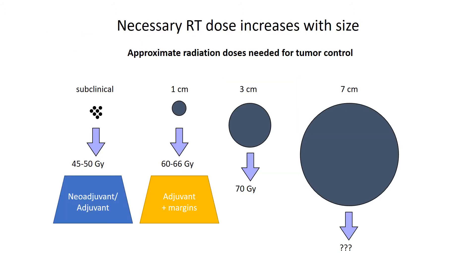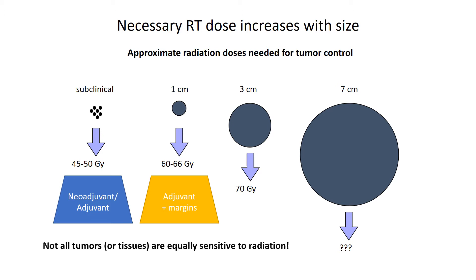The necessary radiation dose increases with size. When we think of subclinical or microscopic disease, that requires a relatively low dose of radiation — that's often the dose we're giving in the adjuvant or neoadjuvant setting when surgery removes the majority of disease. If radiation is meant to be the primary tumorocidal modality, we have to increase the dose to kill all the cells in the tumor. As the tumor gets bigger, the required dose increases. The dose also varies depending on tumor type, because not all tumors or normal tissues are equally sensitive to radiation.